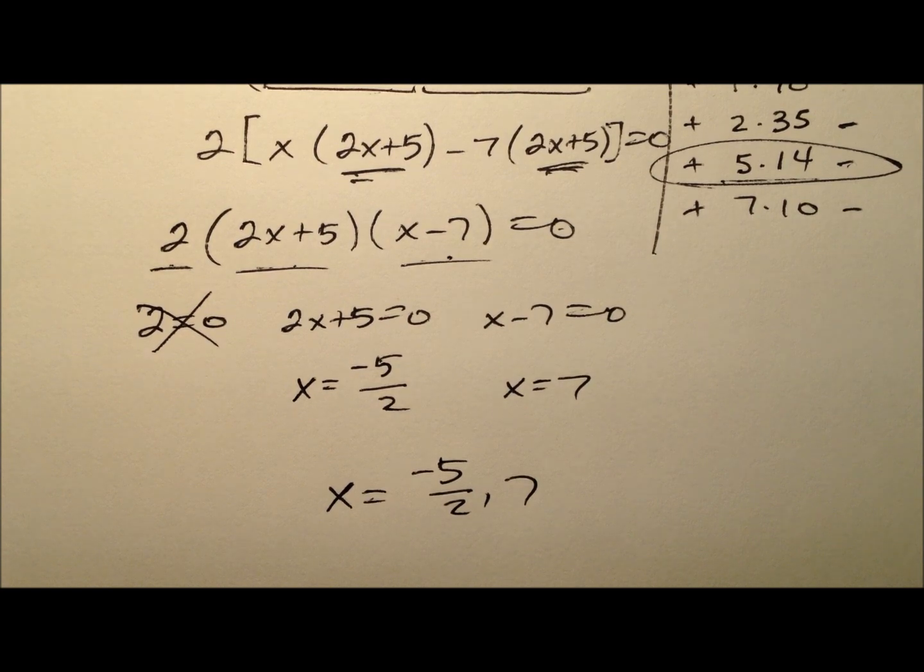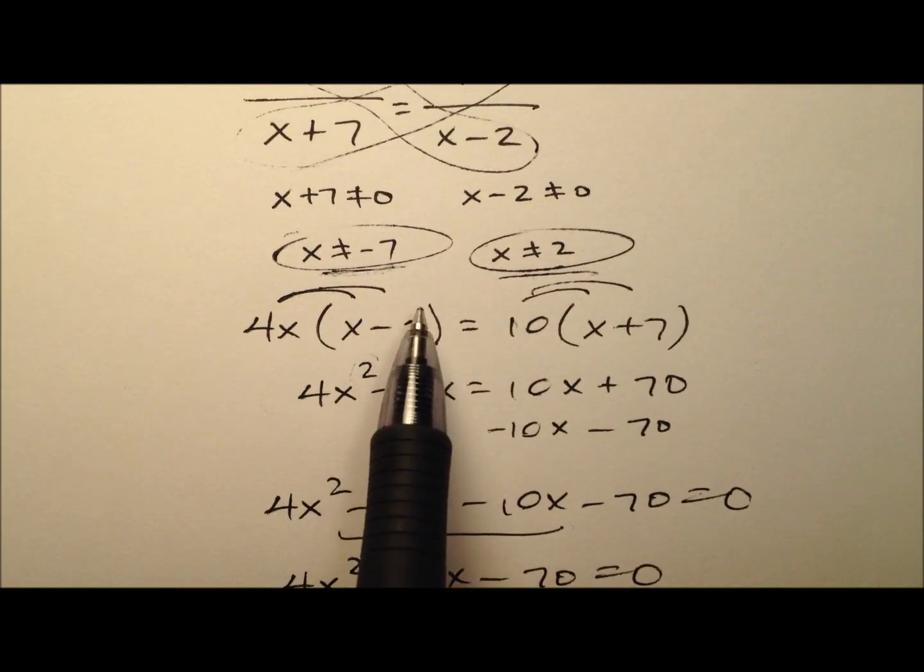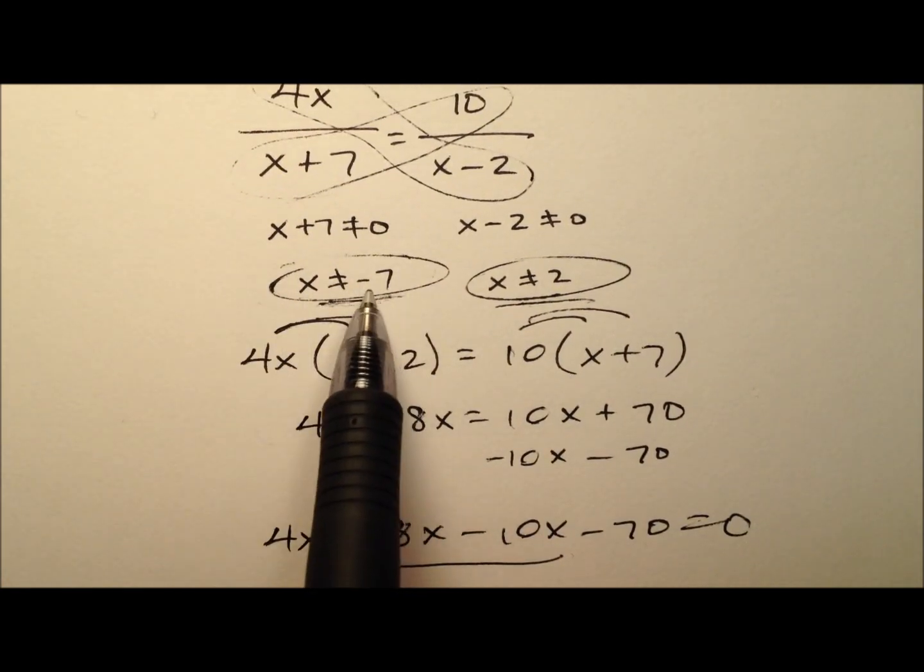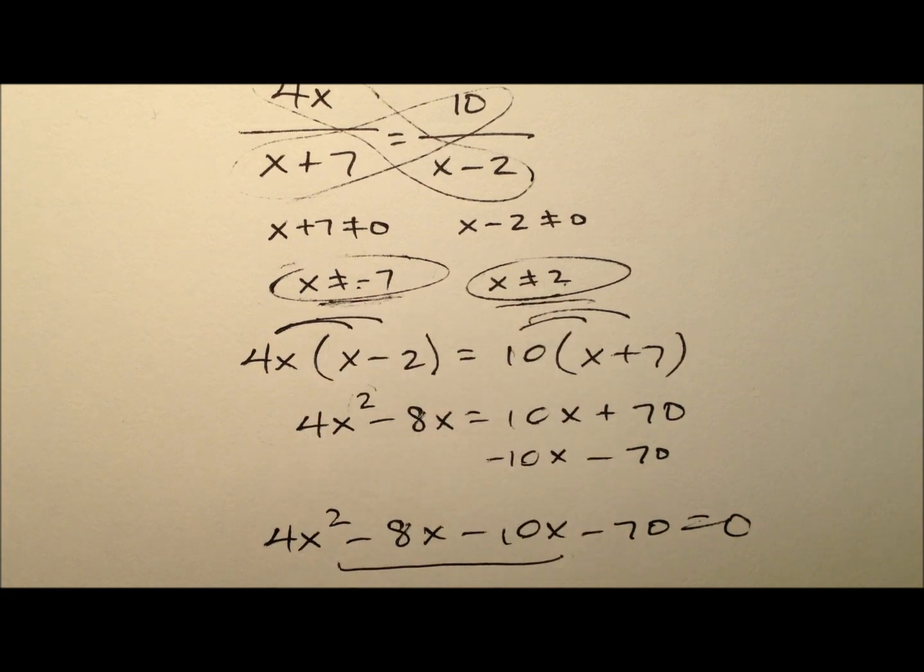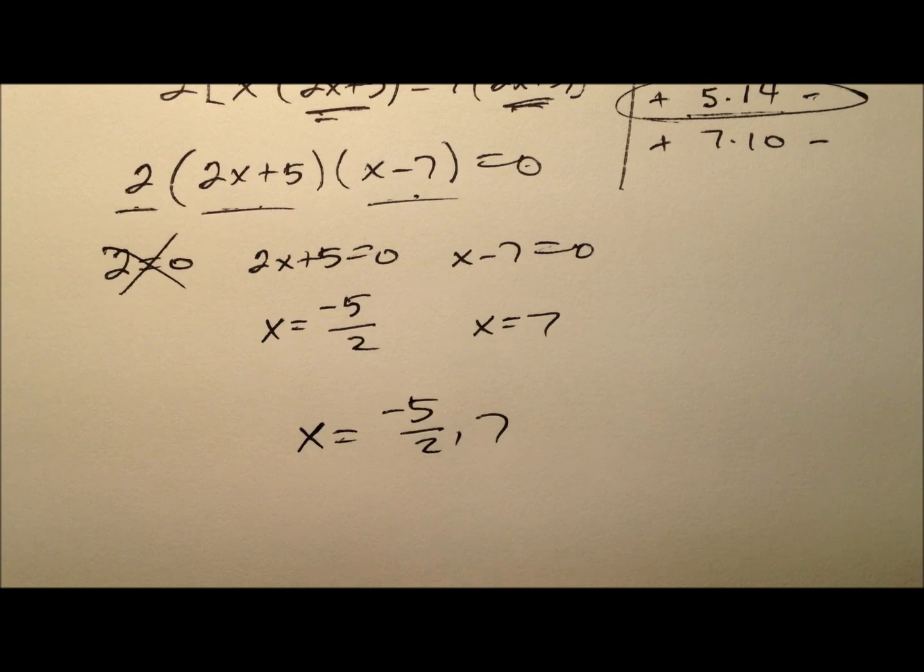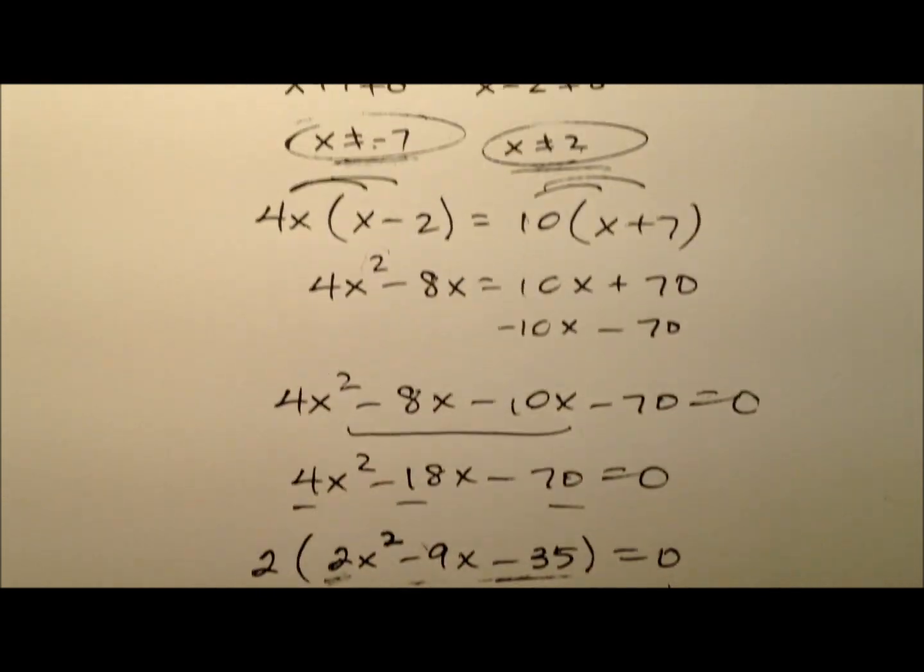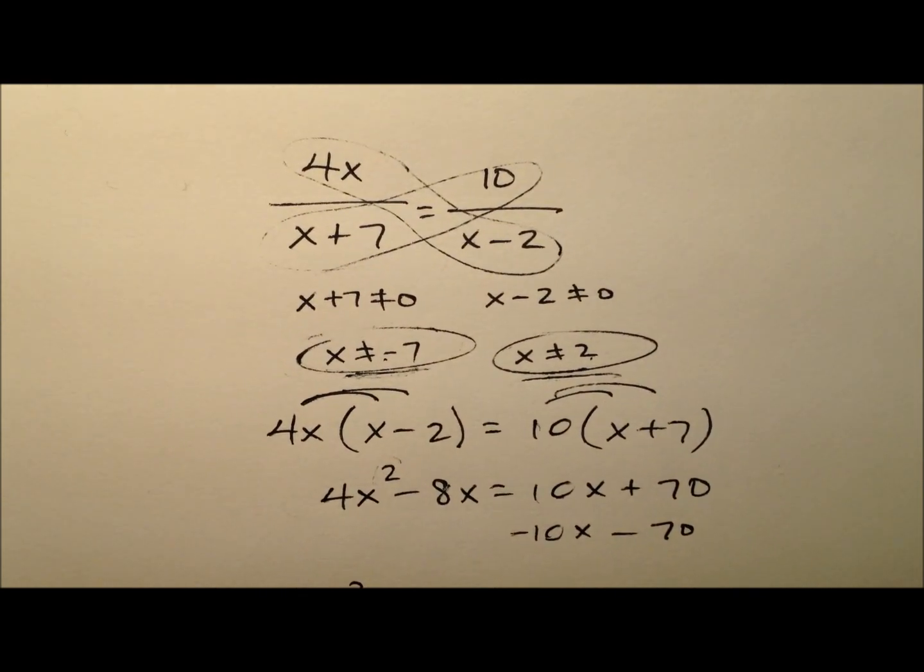But remember, we had a couple of stipulations previously, values that x could not be. So let's go ahead and shuffle back to the top. We said x could not be negative 7 or positive 2. So negative 7. Well, x is positive 7. So that's okay. So we know that these two values are the values for x. So they are the solutions to this original proportion here and we solve for x.